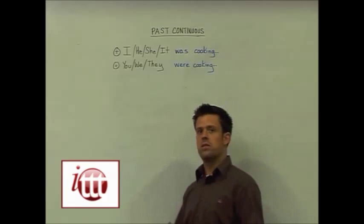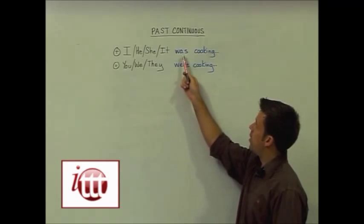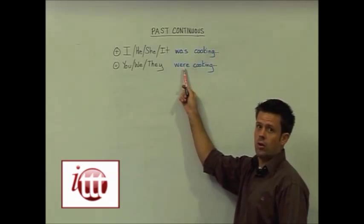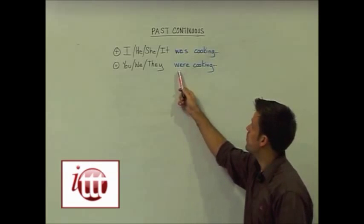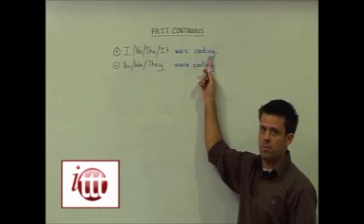We form this positive form by using our subjects, our helping verb or auxiliary verb to be, plus the verb plus ing form, also known as the present participle.